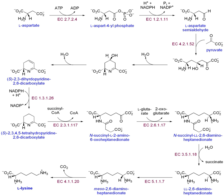The last stage of translation occurs when a stop codon enters the A site. Then, the following steps occur: 1. The recognition of stop codons by release factors, which causes the hydrolysis of the polypeptide chain from the tRNA located in the P site. 2. The release of the polypeptide chain. 3. The dissociation and recycling of the ribosome for future translation processes.